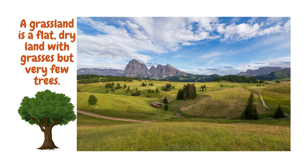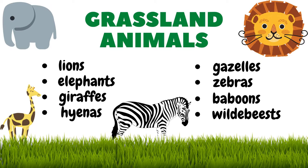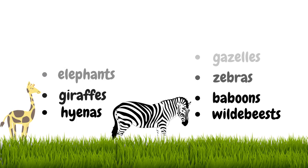A grassland is a flat, dry land with grasses but very few trees. Grasslands are the habitats of animals like lions, elephants, giraffes, hyenas, gazelles, zebras, baboons, and wildebeests. Animals that live in grasslands can generally run very fast or travel on foot over long distances.